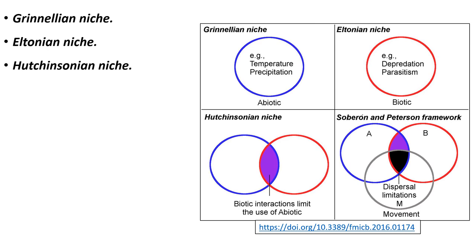Another idea is the Hutchinsonian Niche. Here they consider the abiotic factors limiting the parasite's presence — we call this the fundamental niche — and the biotic interactions limiting the parasite's presence — we call that the realized niche. Under this scenario, all overlapping areas between circles, shown in purple, are abiotically and biotically suitable and accessible for the parasite.